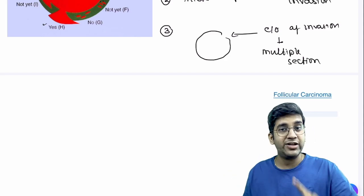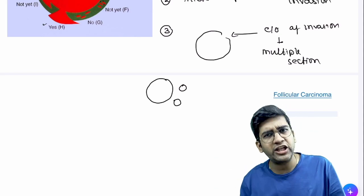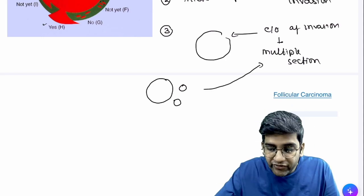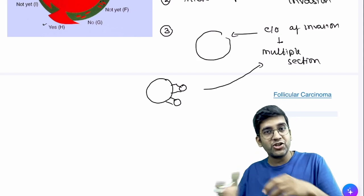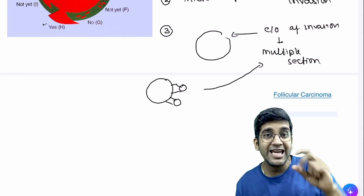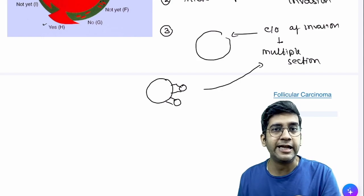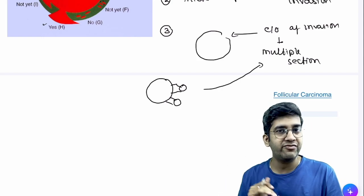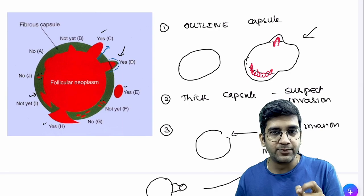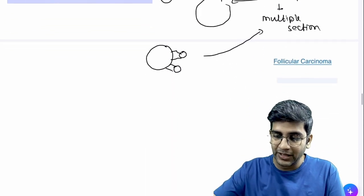When taking multiple sections: if you have an adenoma but very close to it there are two or three more lesions also looking like adenomas, take multiple sections to see if they merge at some point. Same morphology with just a few millimeters' gap appearing as separate adenomas is very unlikely unless there is an inherited syndrome. Take multiple sections to prove whether there is invasion or not.